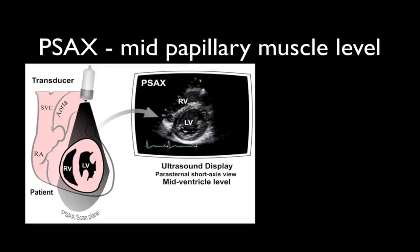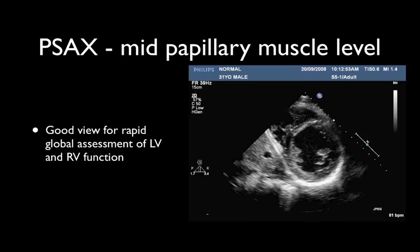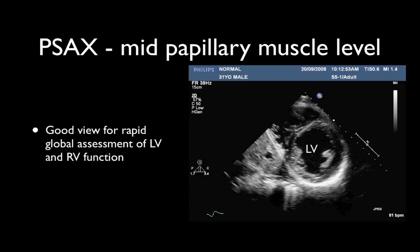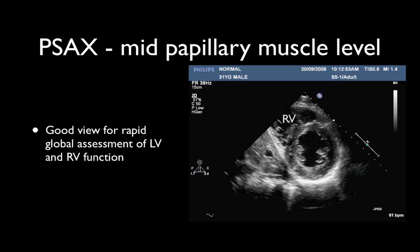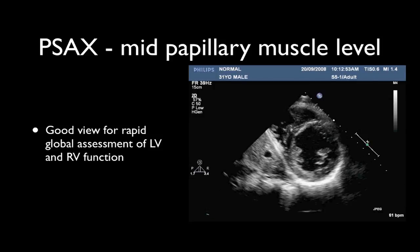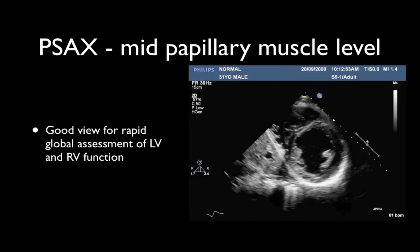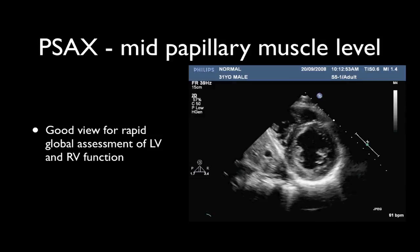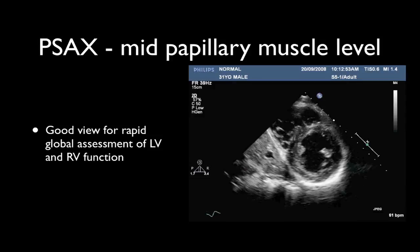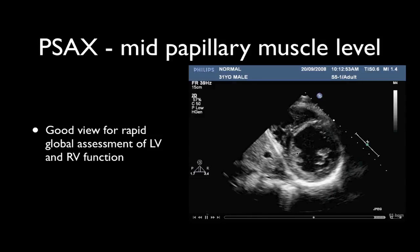Moving towards the apex, we get to the mid-papillary muscle level. This is a particularly good view for rapid assessment of global function of the left ventricle and the right ventricle. In this example, we're looking at a normal 31-year-old heart — that is a normal contracting, dancing donut. Here we see the medial and lateral papillary muscles.